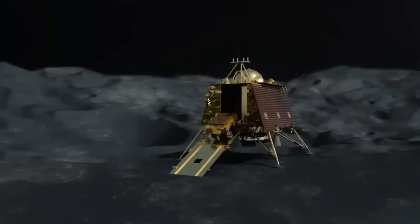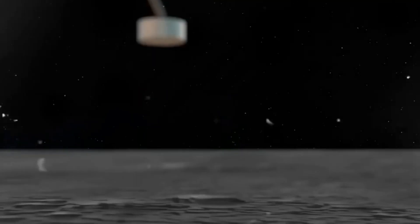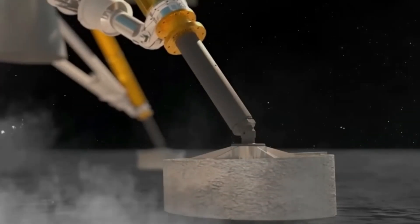A third challenge was the limited sunlight available at the south pole. The sun is always low on the horizon at this region, creating long shadows that make it difficult to see clearly. Chandrayaan-3 had to rely on its batteries and solar panels to power its systems and instruments.